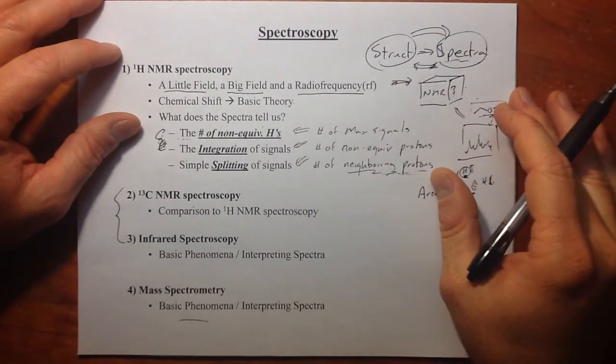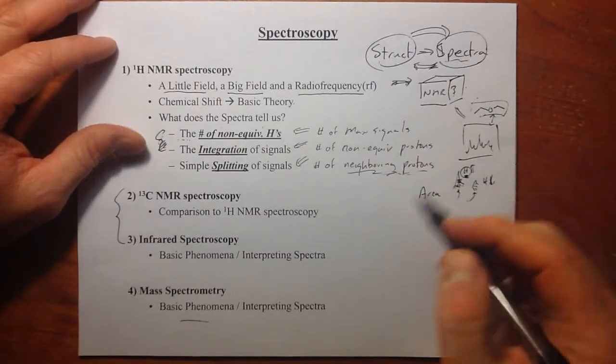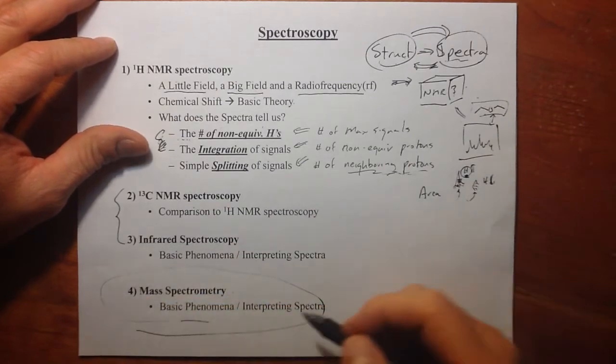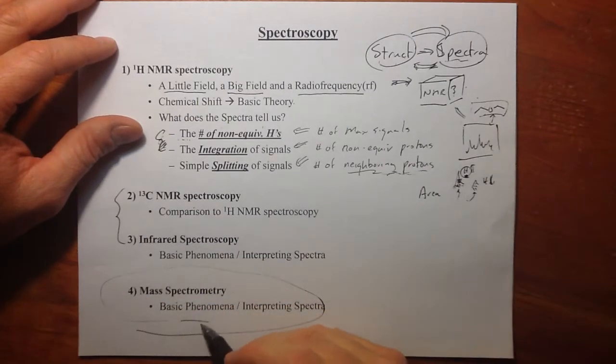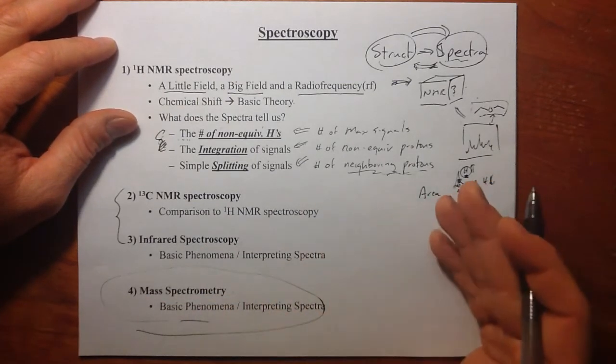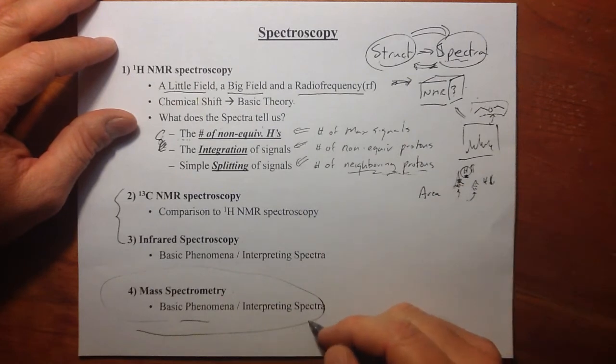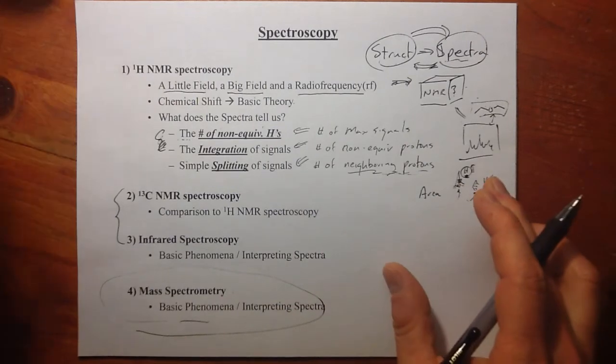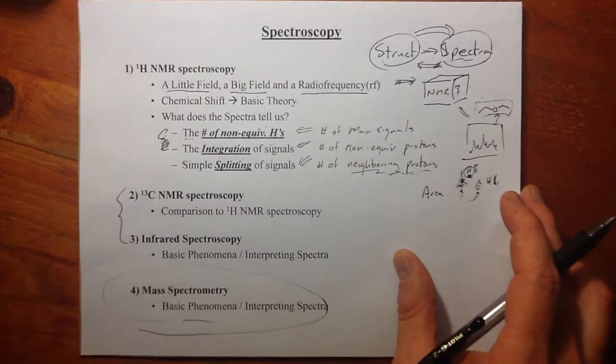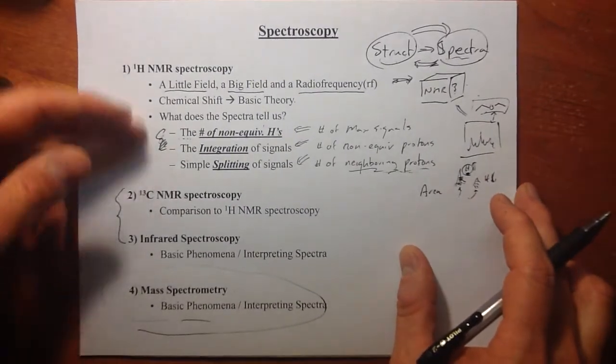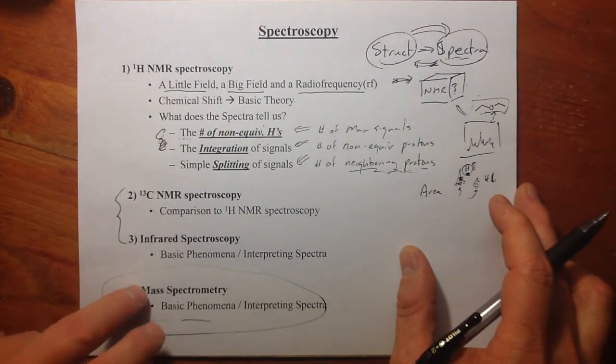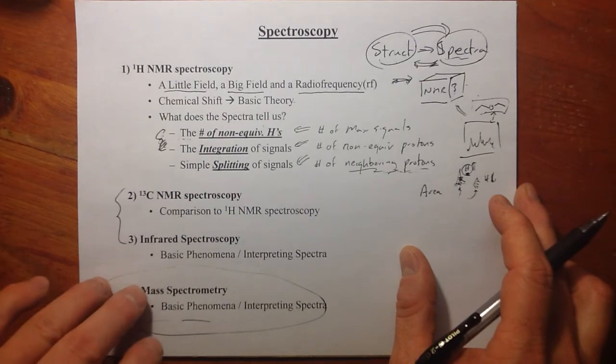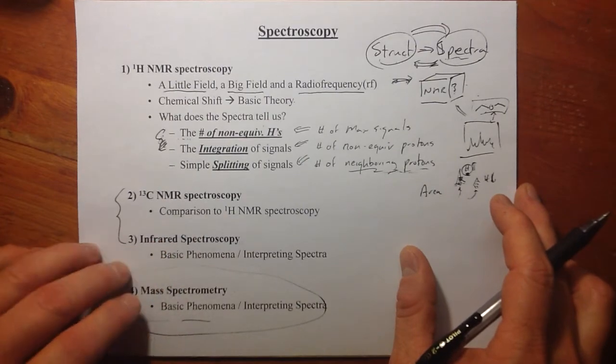This is the last of six videos on characterization of organic molecules. We're going to focus just on mass spectrometry and talk a little bit about how it works and how we interpret mass spectra. We've already covered the methods involving light. This is the method of analysis of molecules that does not involve light.